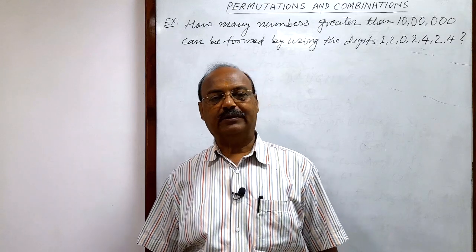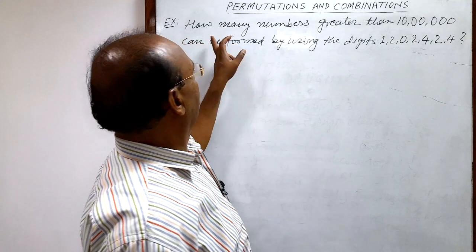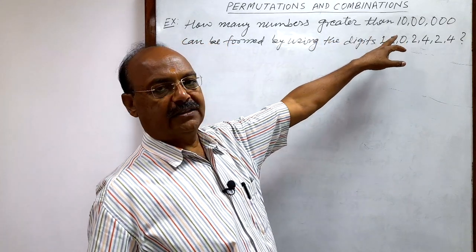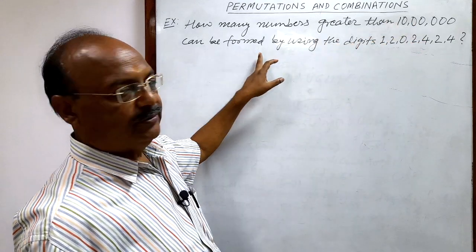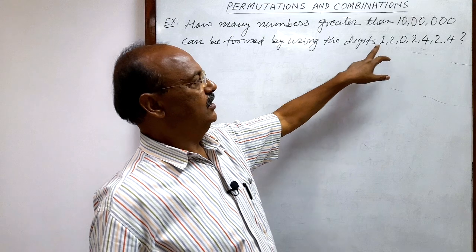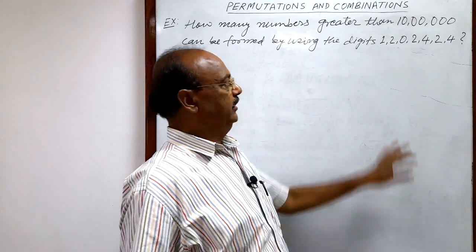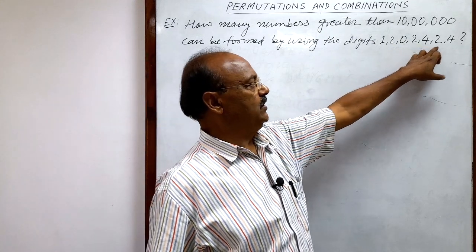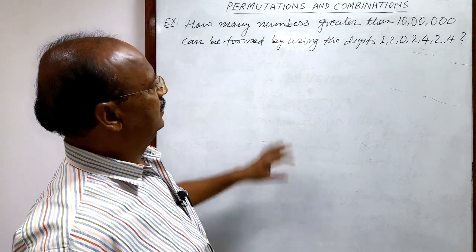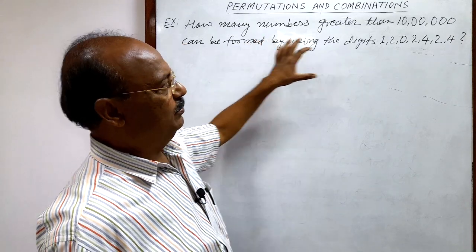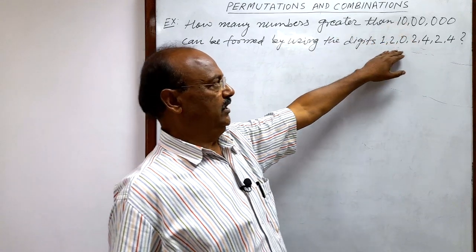Welcome students. Let us see a question from the chapter Permutations and Combinations. The question is: how many numbers greater than 10 lakhs (1,000,000) can be formed by using the digits 1, 2, 0, 2, 4, 2, 4? There are seven digits in total. Let us see the solution — we have to find how many numbers can be formed greater than 10 lakhs using these digits.